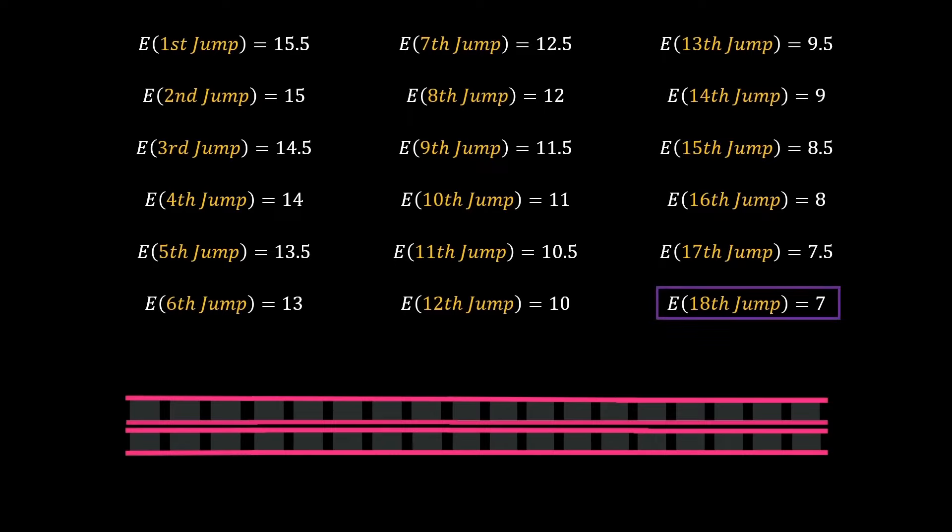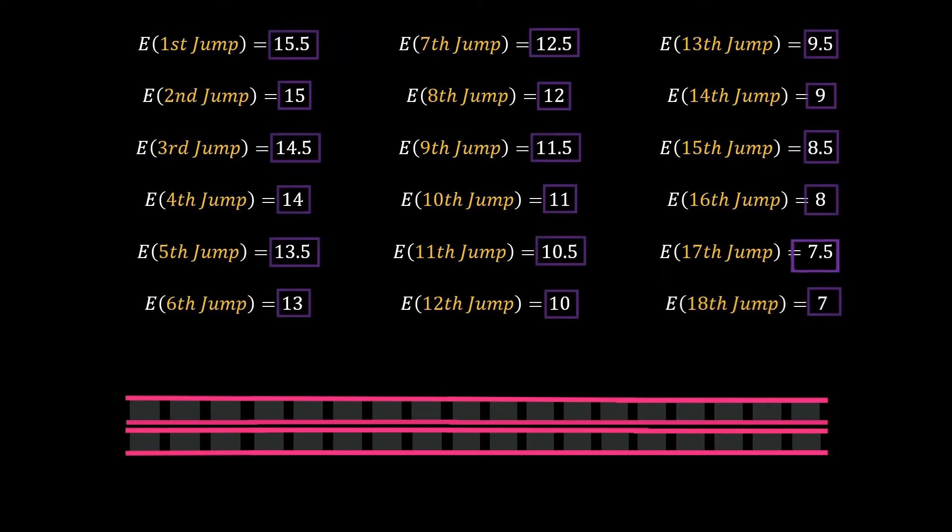We're not done yet though viewers with a keen eye might have noticed a pattern within these expected values. They go down by 0.5 on each jump. There's an intuitive reason for this. Since each jump has a one half chance of losing one survivor the expected loss per jump is one half times one which is 0.5.